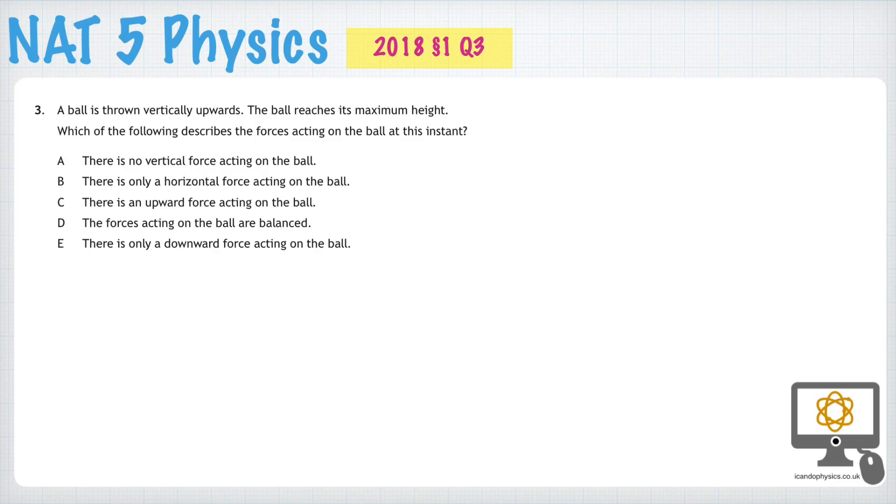Question 3 from the National 5 2018 physics paper is actually quite tricky. A ball is thrown vertically upwards and reaches a maximum height. Let's imagine the ball starts down here and it's thrown upward and it reaches a maximum height at this point here.